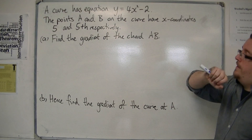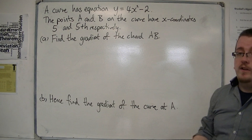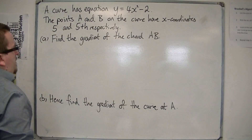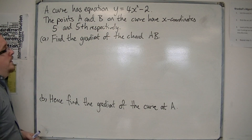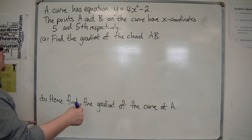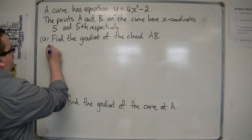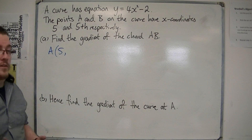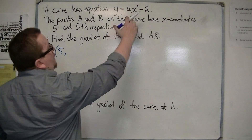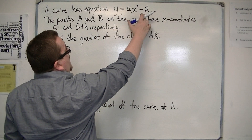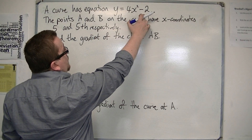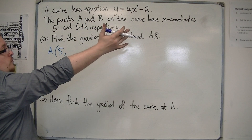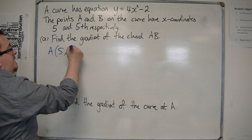Part A: find the gradient of the chord AB. So we know that the x-coordinate of A is 5, so the y-coordinate will be 4 lots of 5 squared, take away 2. So 4 lots of 25 is 100, so 100 take away 2 is 98.